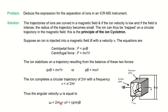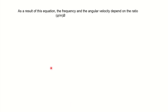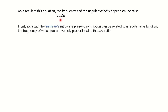Rearranging the equation, we can write the angular velocity as ω = qB/m, where q is charge and m is mass. This is the important angular velocity formula. The derivation for the separation of ions is based on this equation only. As a result, the frequency and the angular velocity are both dependent on the ratio q/m times B.